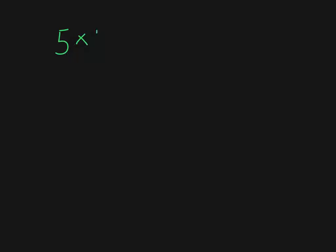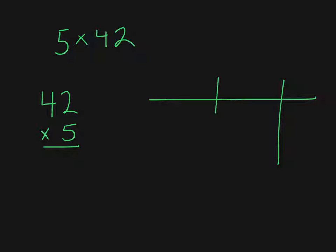I'm going to solve one more problem with you, and this is 5 times 42. I'm going to rewrite this vertically — 42 times 5 — and draw my place value chart with ones, tens, and hundreds. To record this in my place value chart, I'm going to record my largest factor, 42, which is four tens and two ones. I'm multiplying this by five, which means I have five equal groups of 42, and I need to figure out what that equals.